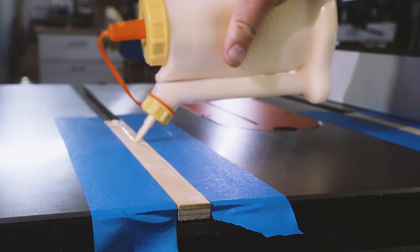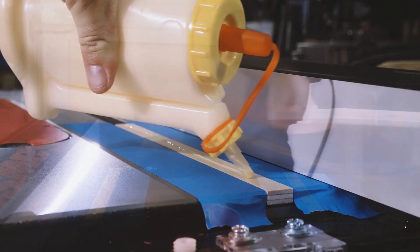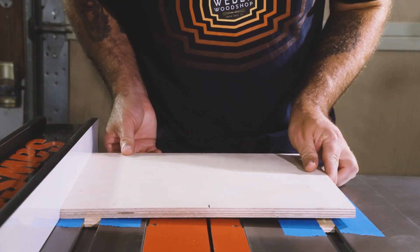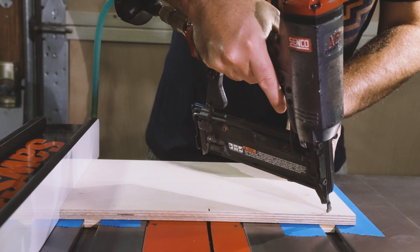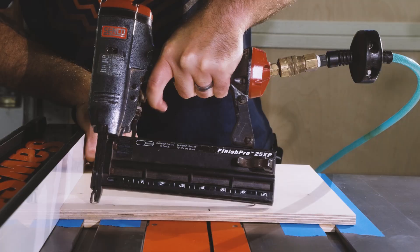We'll put some glue down on the runners, and then place our bottom piece up against the fence so we know it's straight. And a few brad nails will secure the runners in place until the glue cures.